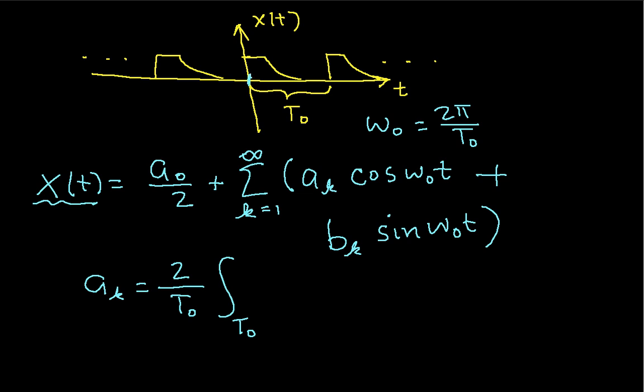You can start at 0 and go to t0. You can start at minus t0 over 2 and go to t0 over 2. You can set this up any way you want to as long as you integrate over exactly one period. x of t cosine omega 0 t dt.